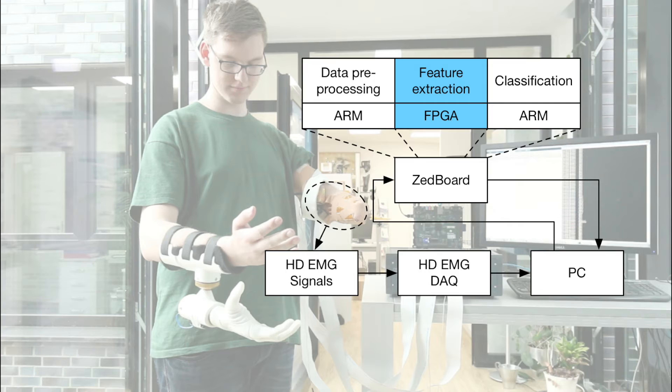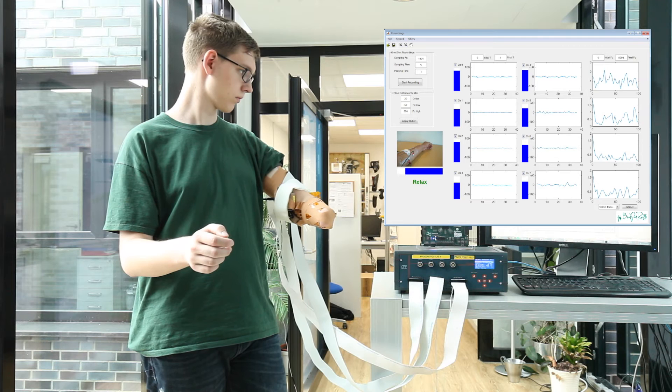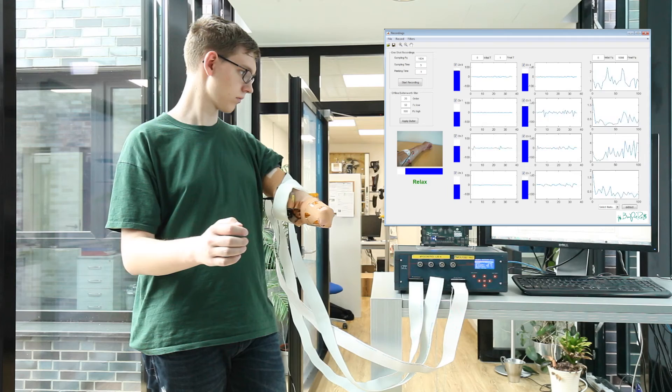Our system operates in two phases. In the training phase, a MATLAB program on the PC displays different movements to our test subject who contracts the muscles in his residual limb accordingly. The signals are used to train a classifier. Our subject also moves his sound arm in the same way so we can see what movement he intends to perform.